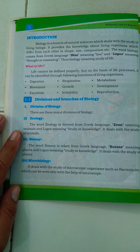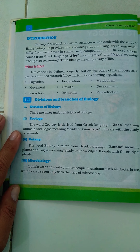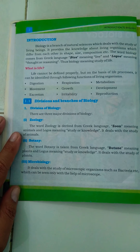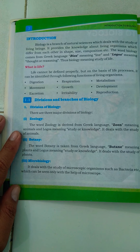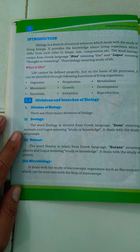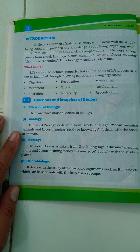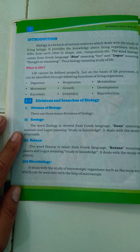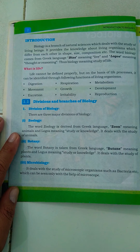Digestion occurs only in living organisms. Respiration also occurs only in living organisms, by which they breathe in oxygen and give out carbon dioxide. Metabolism also occurs in living organisms — it involves the breakdown and combination of chemical materials and molecules inside the body.